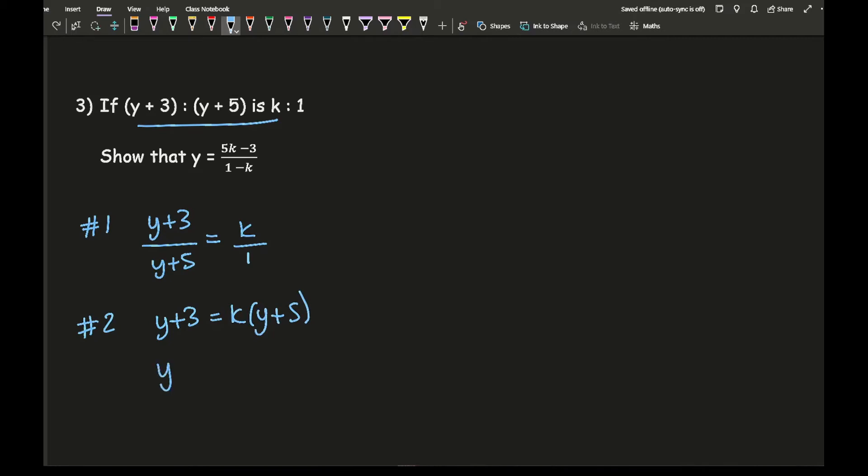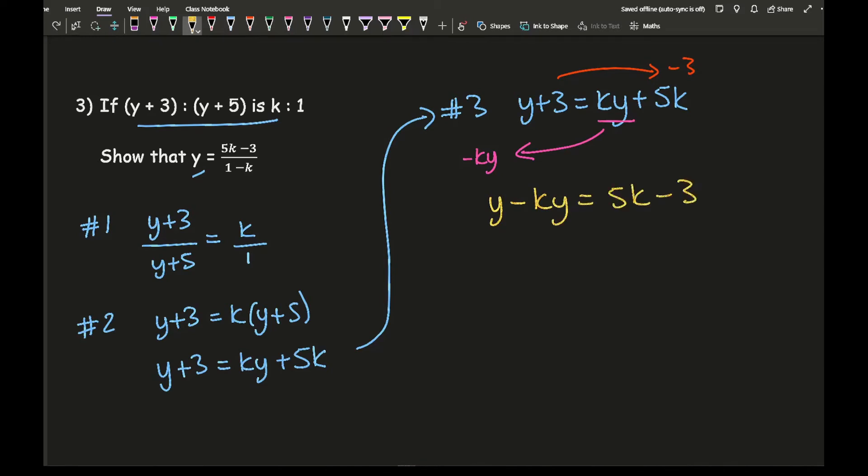With more space over here, I want to make y the subject. I take everything with y onto one side, everything else to the other. If I take this ky over to this side, so I'm going to minus ky, and I take this 3 over to this side, so I take away 3, then what I end up with is y minus ky equals 5k minus 3. You can see it's starting to give me the components for this.